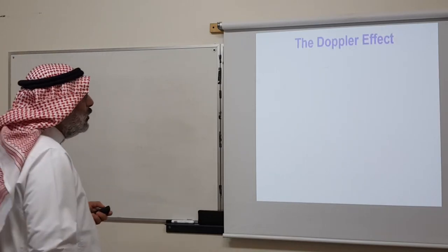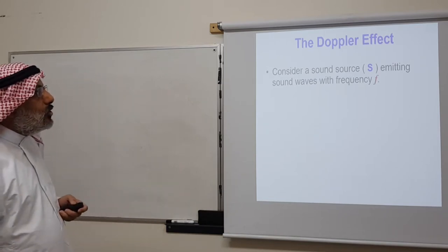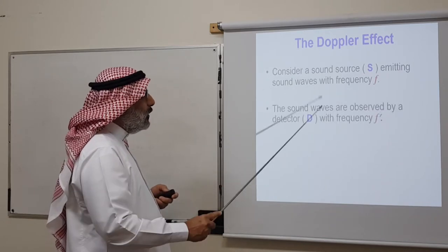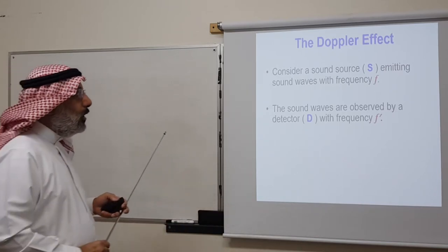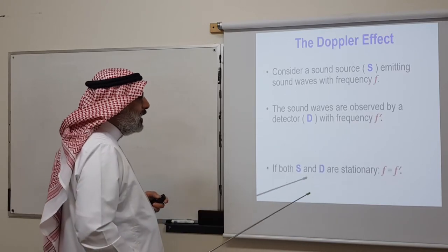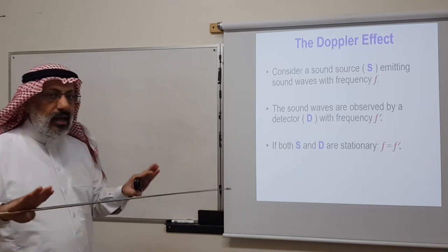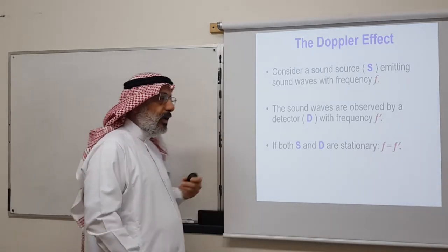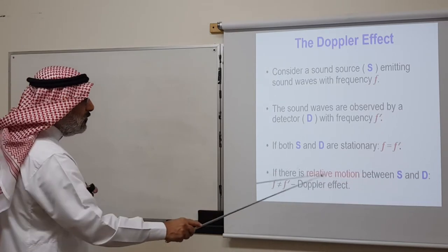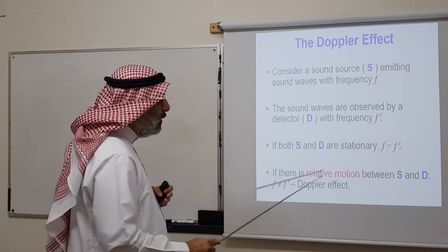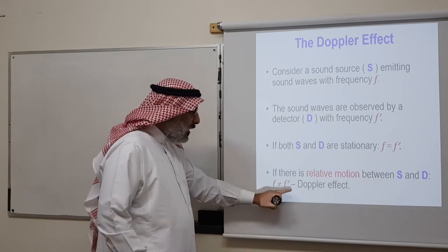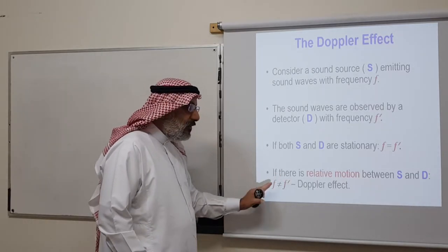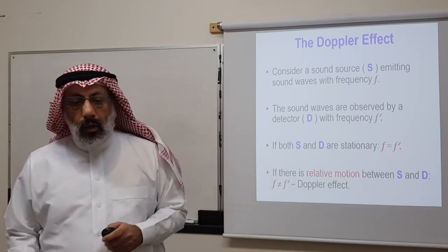Let's consider a point source S emitting sound waves with frequency f, observed by a detector with frequency f'. If both the source and the detector are stationary, the emitted frequency equals the detected frequency. However, if there is relative motion between the source and the detector, the frequency observed by the detector will not equal the frequency emitted by the source. This difference in frequency — this shift — is what we call the Doppler effect.